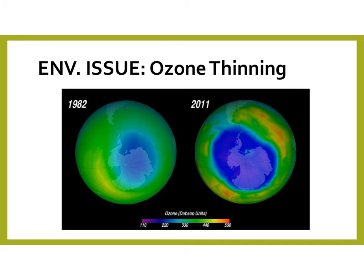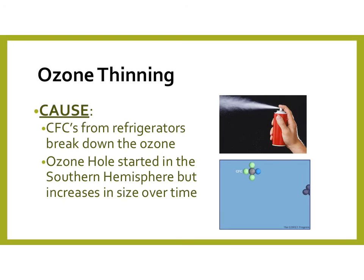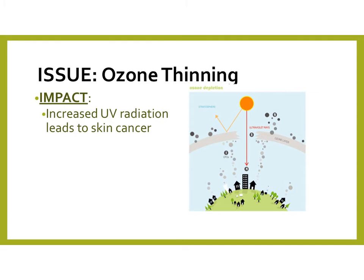The next environmental issue is ozone thinning. The ozone is made up of O3 — three oxygen molecules bonded together — and it protects us from UV light. There's a chemical called CFCs, or chlorofluorocarbons, released from refrigerators and aerosol cans. They interact with the ozone and a free radical is released that breaks down the ozone. These are starting to accumulate in the southern hemisphere, which is where we saw a huge hole starting to appear in our ozone.